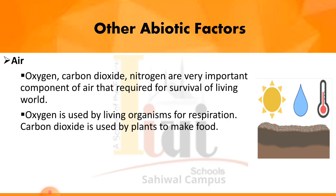Plants use carbon dioxide gas, water vapors, and sunlight in the process of photosynthesis to make food, and oxygen is released as a byproduct. So oxygen is important to plants as well as human beings and animals. Carbon dioxide gas is released into the atmosphere by living organisms during respiration as a byproduct of the oxidation of food. During oxidative breakdown, oxygen is utilized, carbon dioxide is released, and energy is made available to the individual.